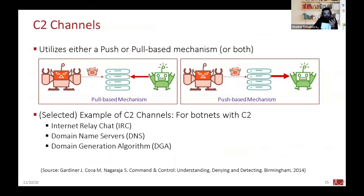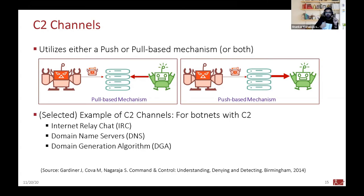C2 channels can be categorized as push-based or pull-based. In a pull-based mechanism, the bot master places a command on the C2 server and the bots pull the update. In a push-based mechanism, the C2 server pushes the command directly to the bots — this is almost instantaneous. Pull-based depends on the polling interval, so longer delays mean slower command dissemination. Examples of C2 channels for botnets include IRC servers, domain name servers, and DGA — domain generation algorithm.